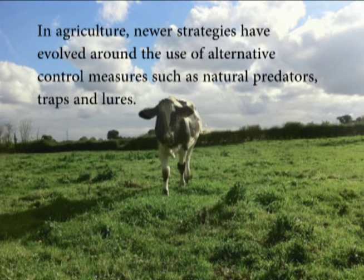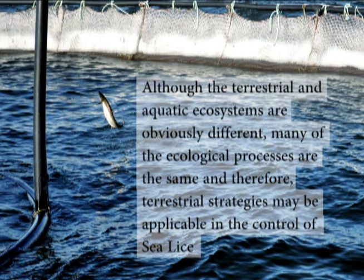In agriculture, newer strategies have evolved around the use of alternate control measures such as natural predators, traps and lures. Although the terrestrial and aquatic ecosystems are obviously different, many of the ecological processes are the same, and therefore terrestrial strategies may be applicable in the control of sea lice.